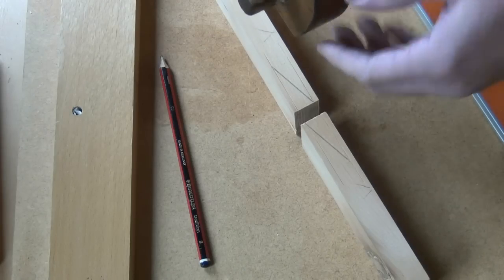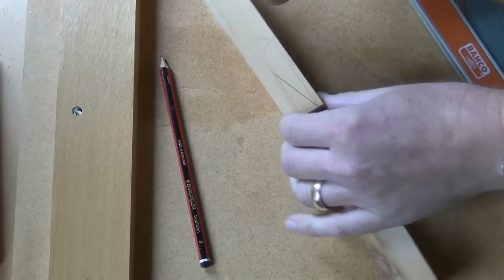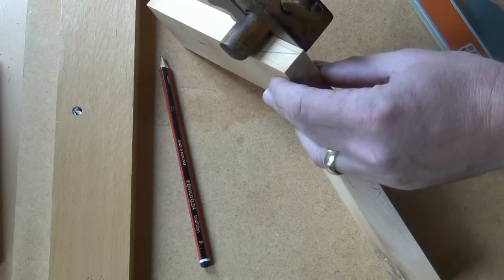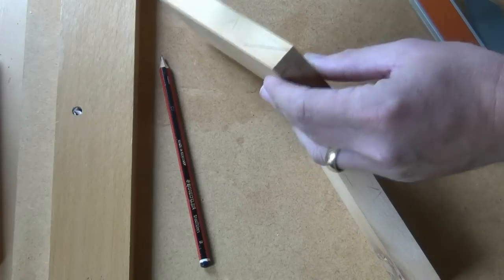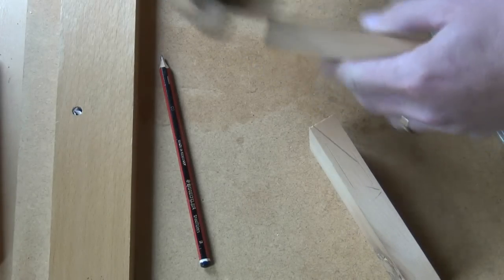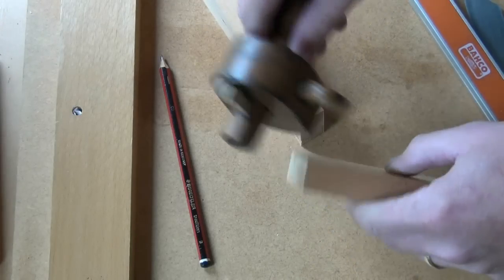I've set my marking gauge to approximately a sixth of the width of the material. I've marked a line from the face side on both components and that will be the width of our step.